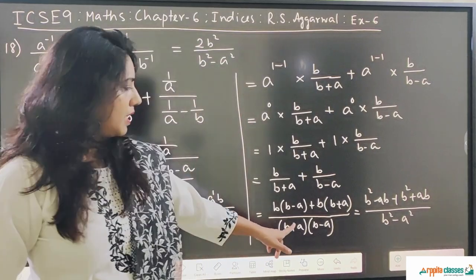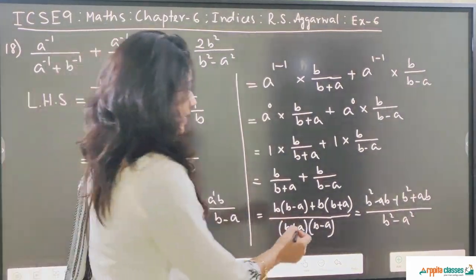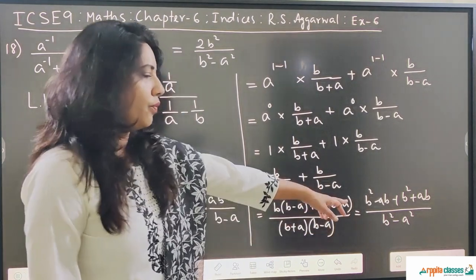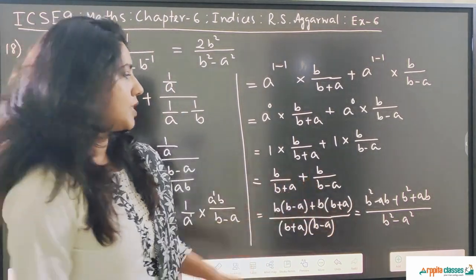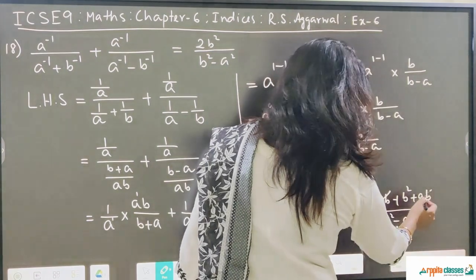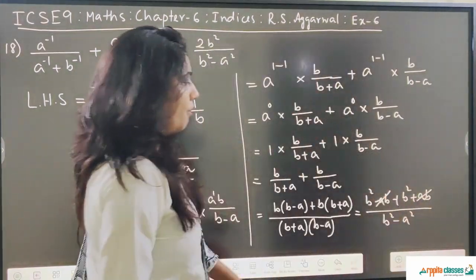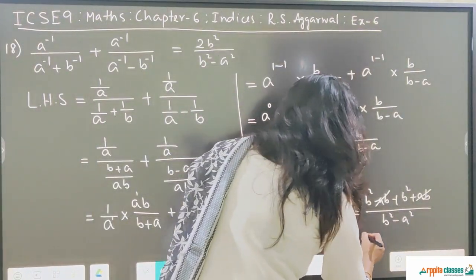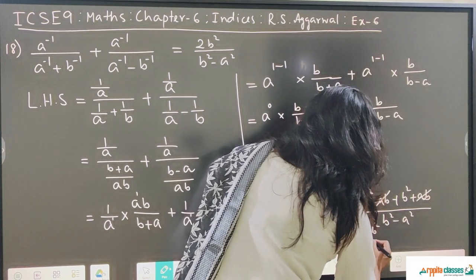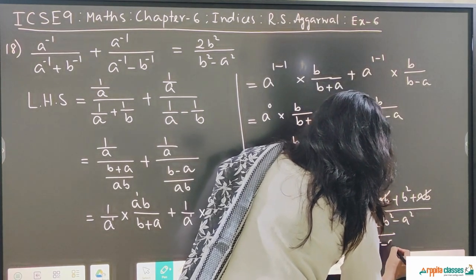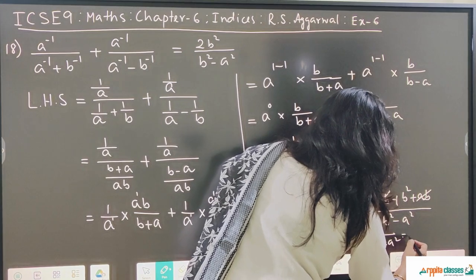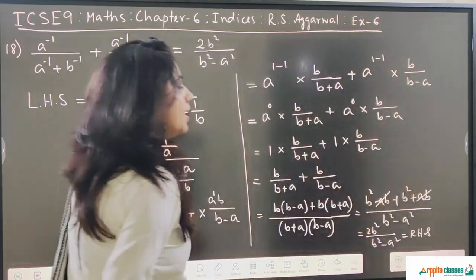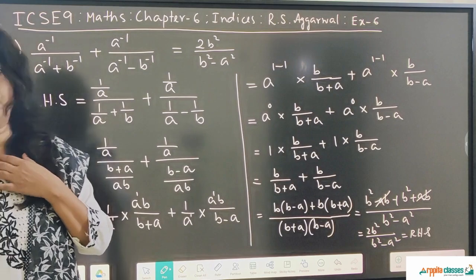Here our a is b and our b is a, so the denominator is b squared minus a squared. The ab and ab terms cancel out. So finally we get 2b squared divided by b squared minus a squared. Now look at your right hand side — this is your right hand side. So that's proved.